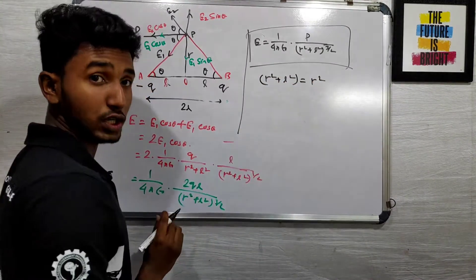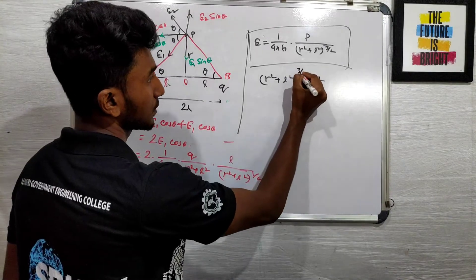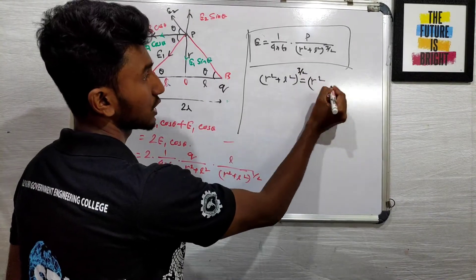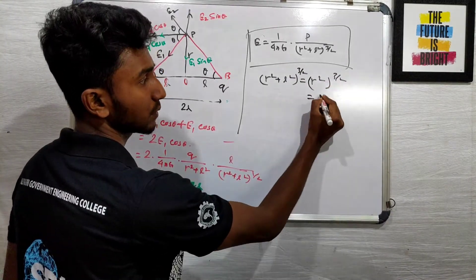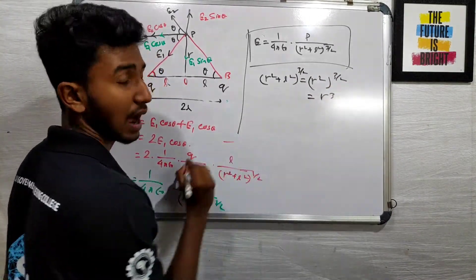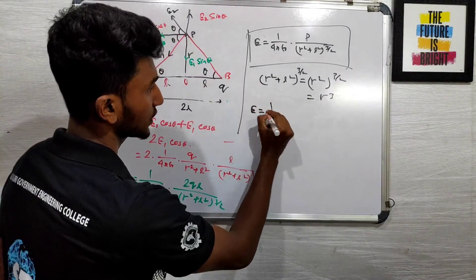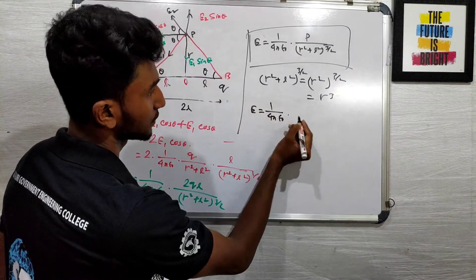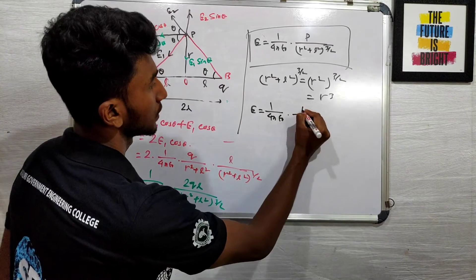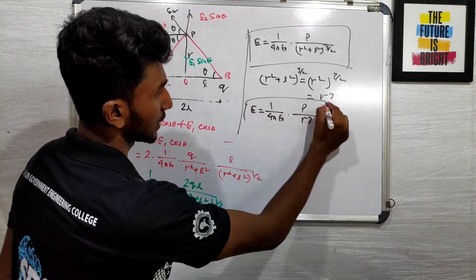When R >> L, R² + L² ≈ R², and this power (3/2) gives R³. So this is the answer: E = (1/4πε₀) × P / R³.